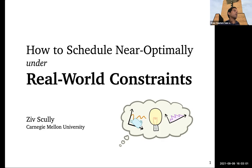Ziv's research focuses on optimizing and analyzing computer systems and algorithms from a stochastic perspective, including job scheduling, load balancing, combinatorial optimization, and uncertainty in parallel algorithms. Recent publications have been recognized with awards from ACM SIGMETRICS Best Paper Award 2021, Best Paper Award 2020, Outstanding Student Paper Award 2019, IFIP Performance Best Student Paper Award 2018, and INFORMS Applied Probability Society Best Student Paper Prize finalist in 2018.